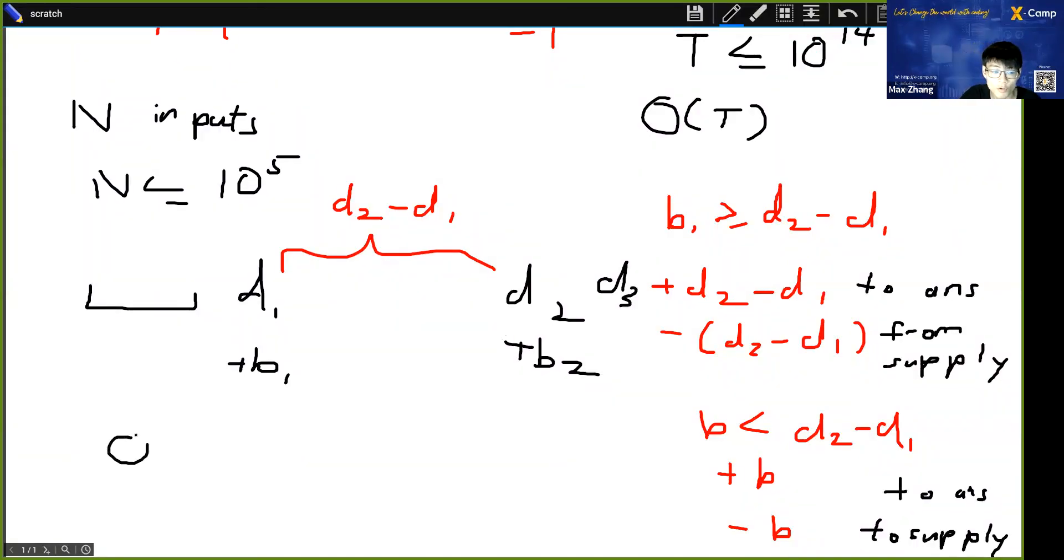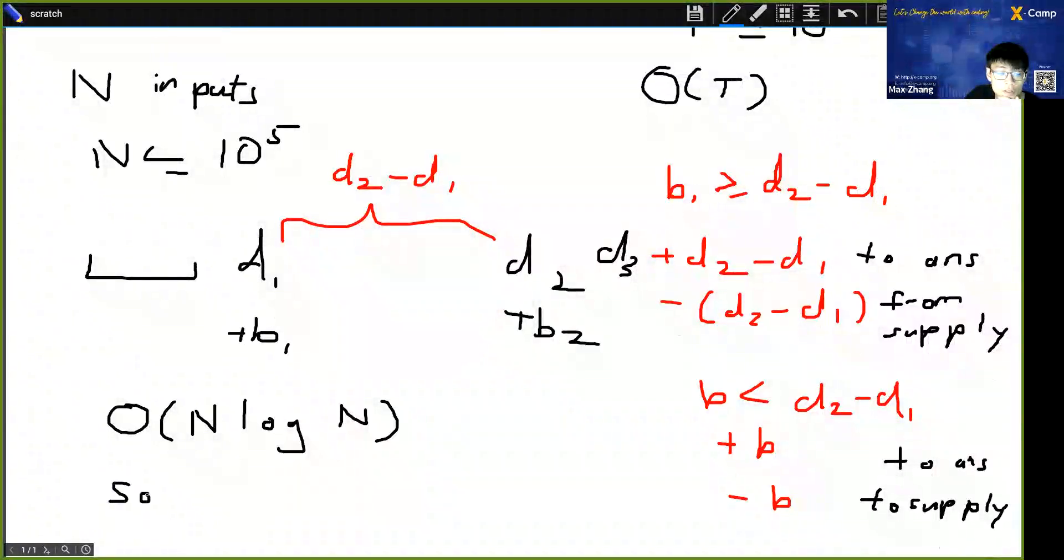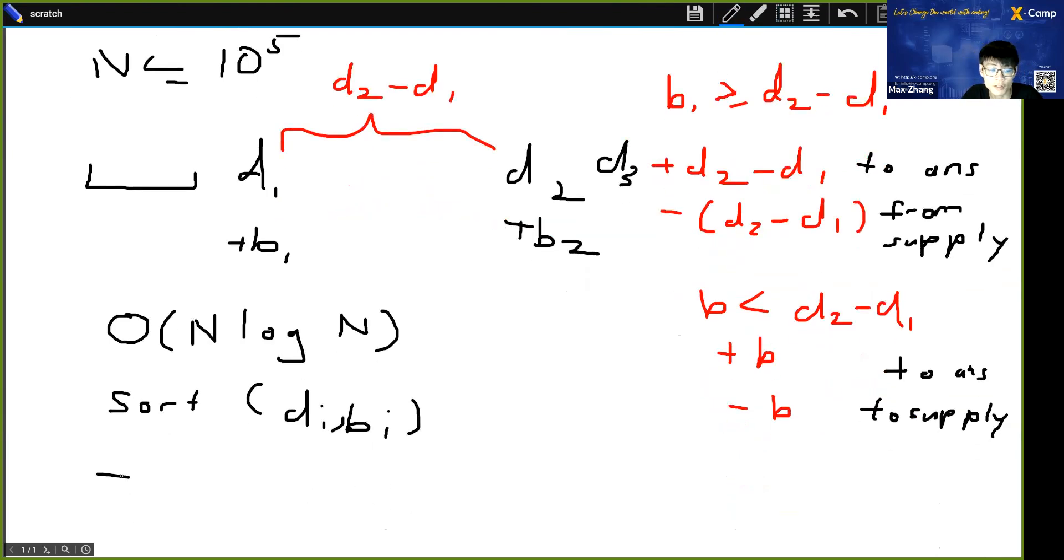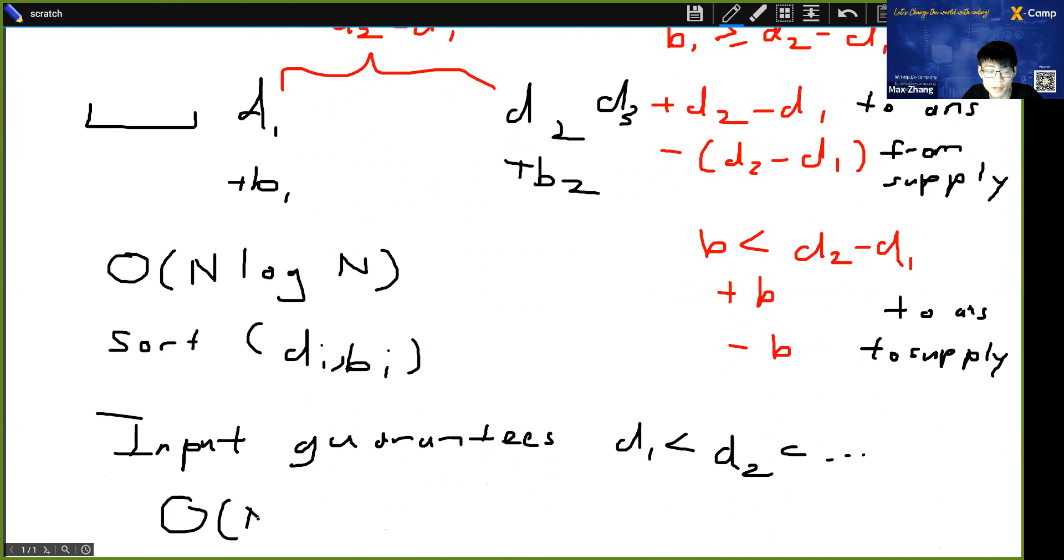And so this gets us to an O of N solution. Actually, I think we might need O of N log N because we have to sort the initial inputs of D_i and B_i. Or actually, we do, actually the inputs, it guarantees that they're already sorted, actually. The inputs guarantee that D1 is less than D2 is less than, and so on. So actually, it's just we can just do O of N because they already sorted for us in the input. So we have an O of N solution. And that will be fast enough to solve all the test cases.